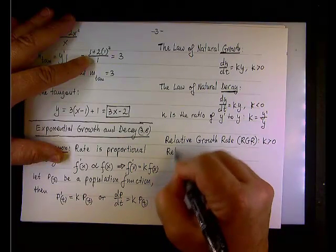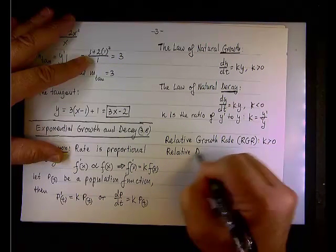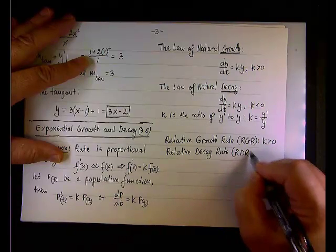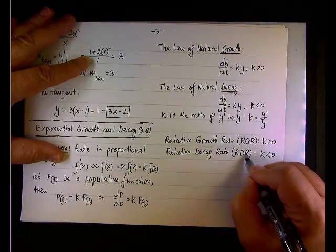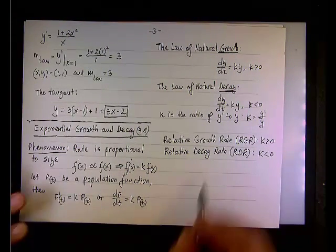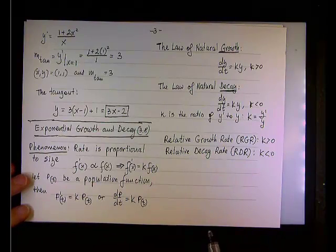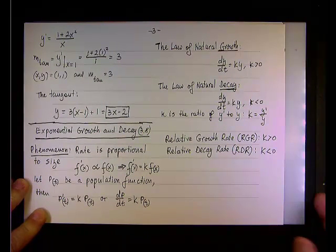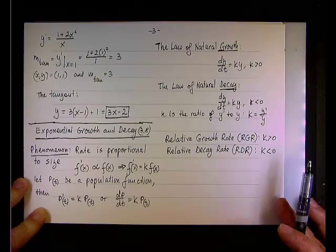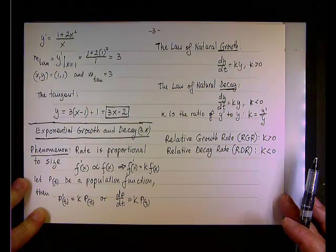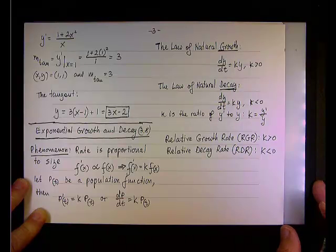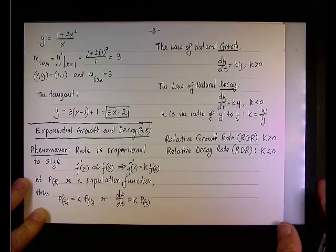So we say that we have relative growth rate or RGR. It means that k is positive, and then we have relative decay rate or RDR. So k is negative. You have learned that the difference between, say, linear function and exponential function, the growth rate of a linear function is constant. But the growth slash decay rate, or the rate in general, of an exponential function, you said it's a relative rate. We called it the percent rate of change.